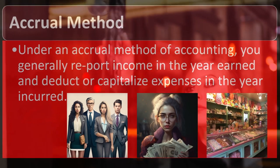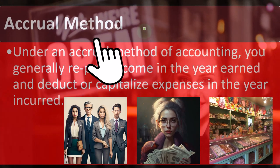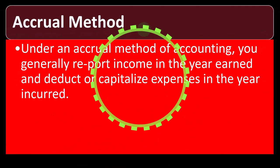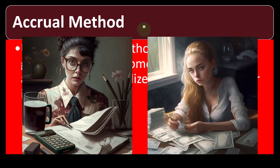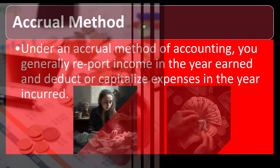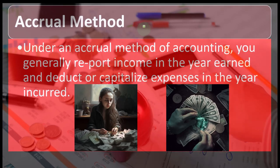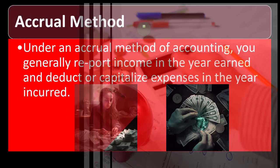Large businesses generally use an accrual method because it's more difficult to manipulate your books on an accrual method than a cash method. On a cash method, you could try to manipulate your books by adjusting when you receive and make payments. The IRS puts some limitations on that. On an accrual method, you have to record income when you actually earned it, which is a more specific timeframe than when you got the cash.